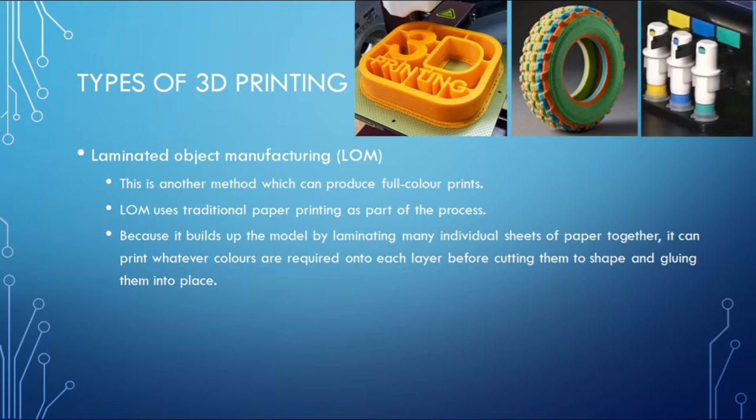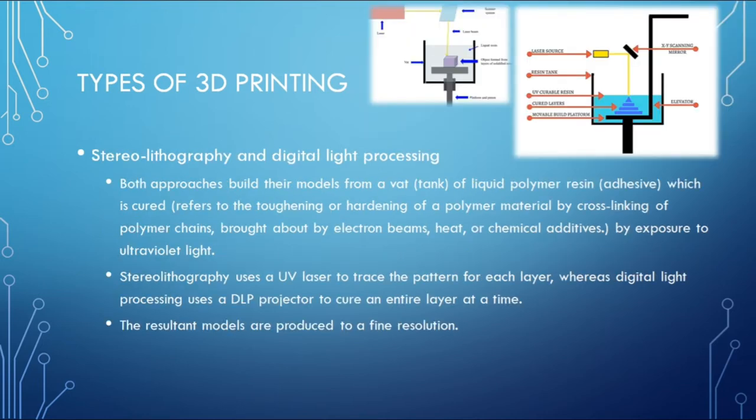Laminated Object Manufacturing (LOM) is another method which can produce full-color prints. LOM uses traditional paper printing as part of the process, building up the model by laminating many individual sheets of paper together. It can print whatever colors are required onto each layer before cutting them to shape and gluing them into place.